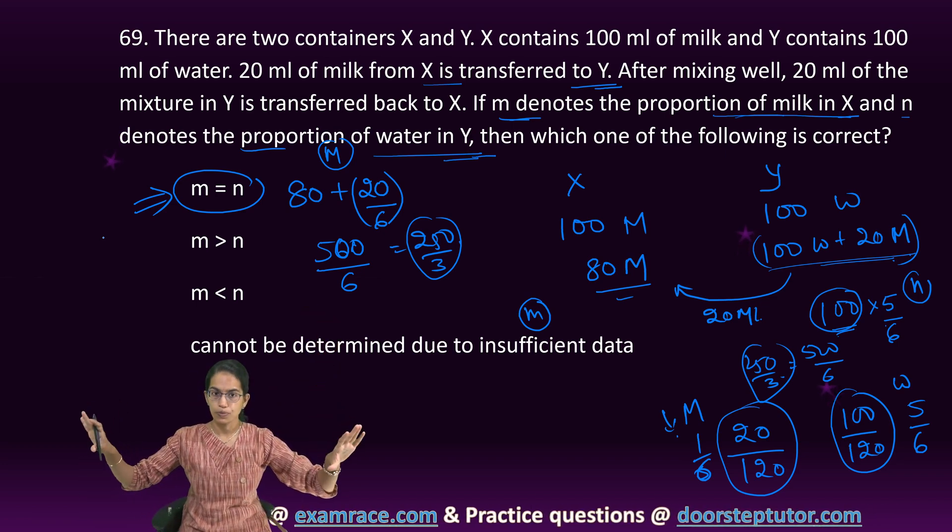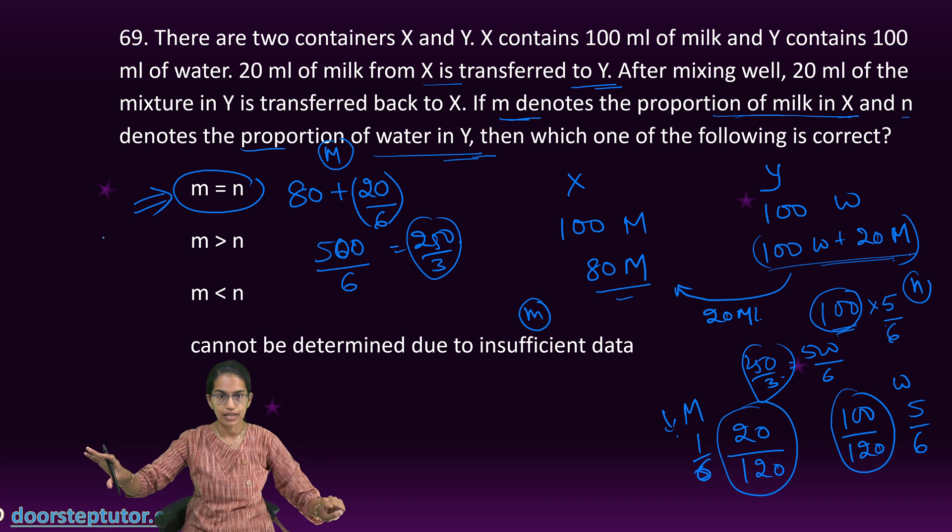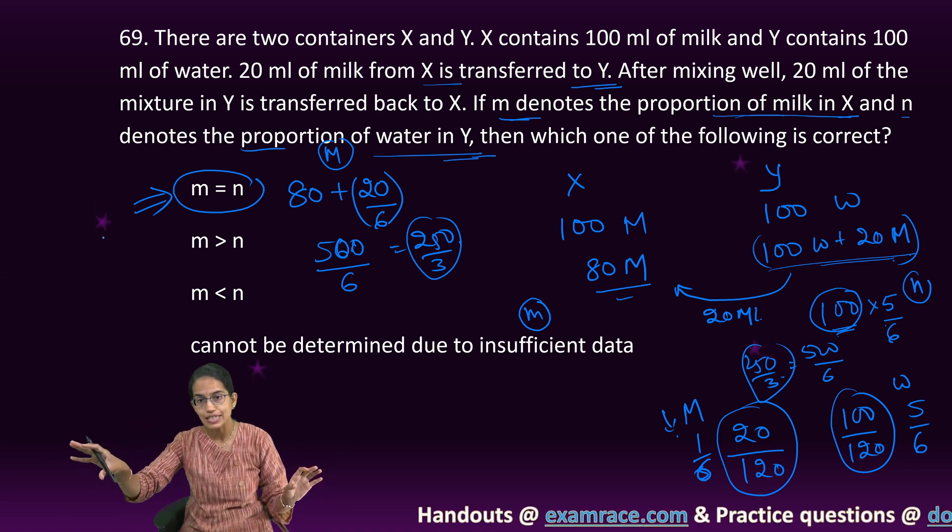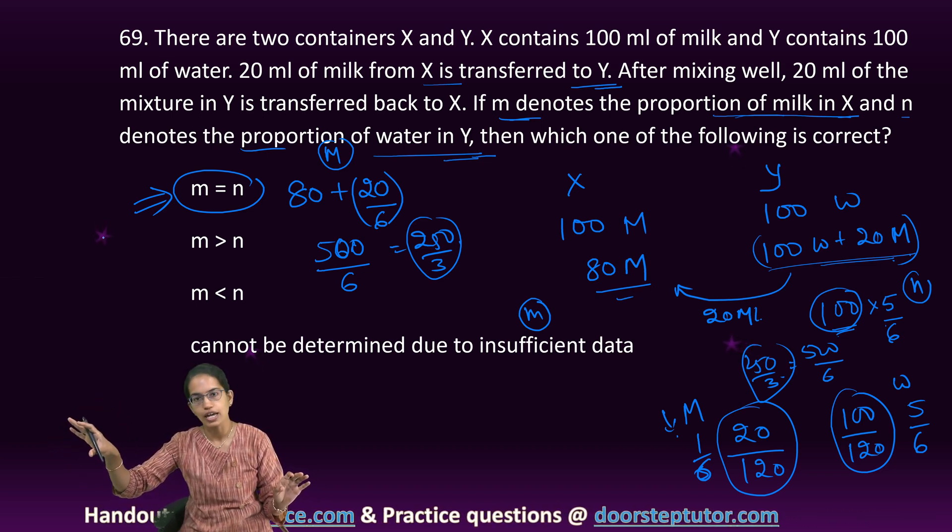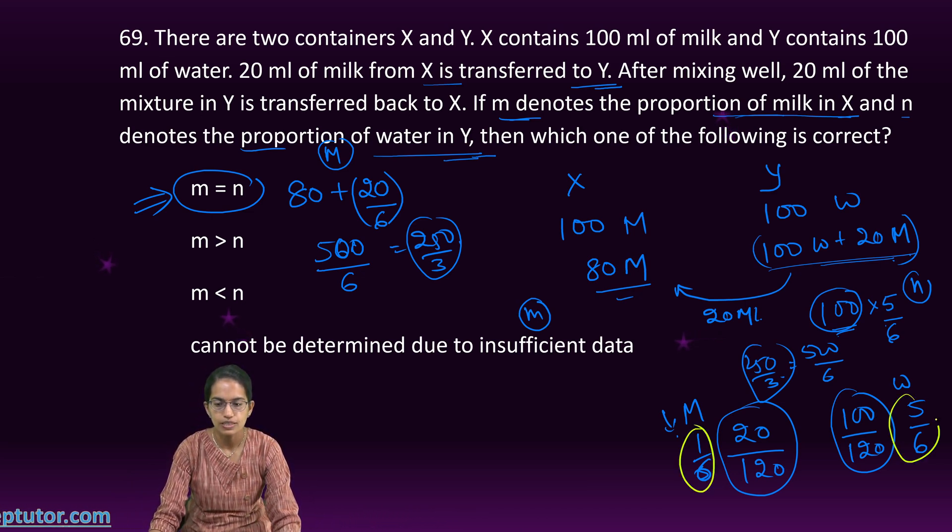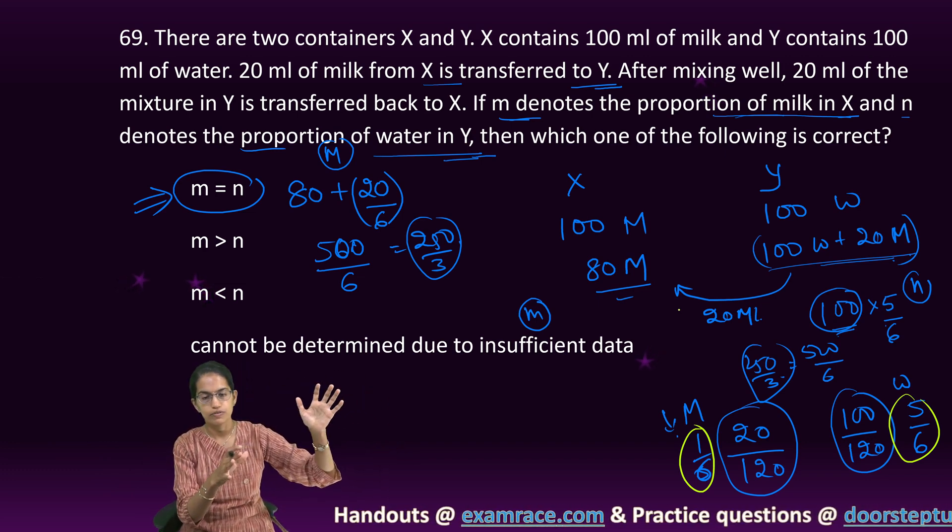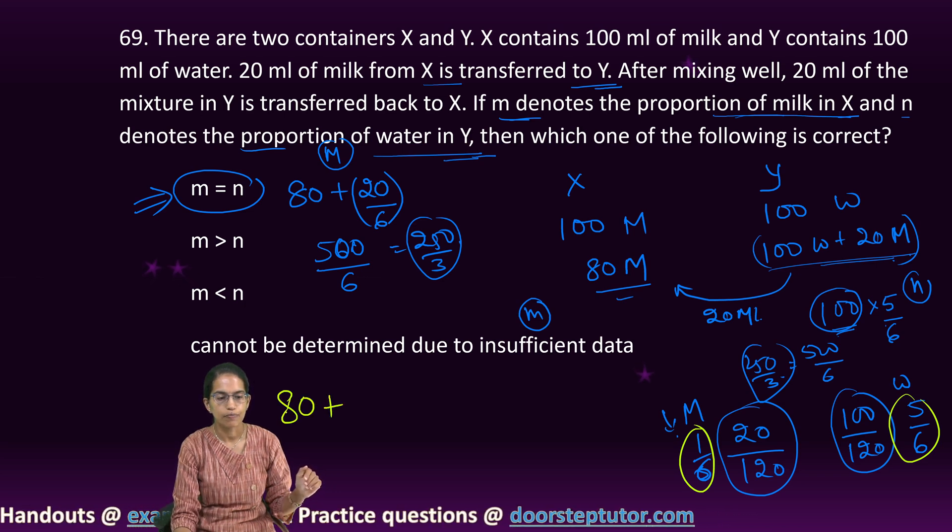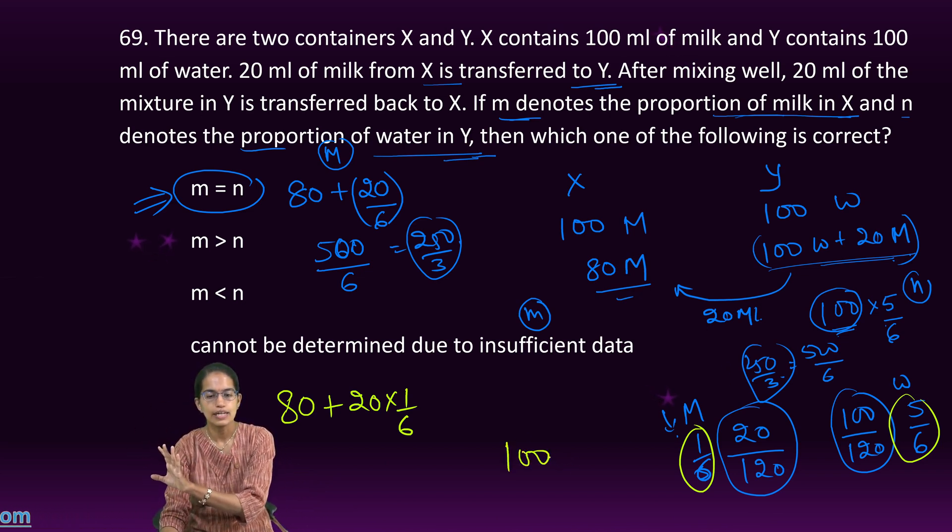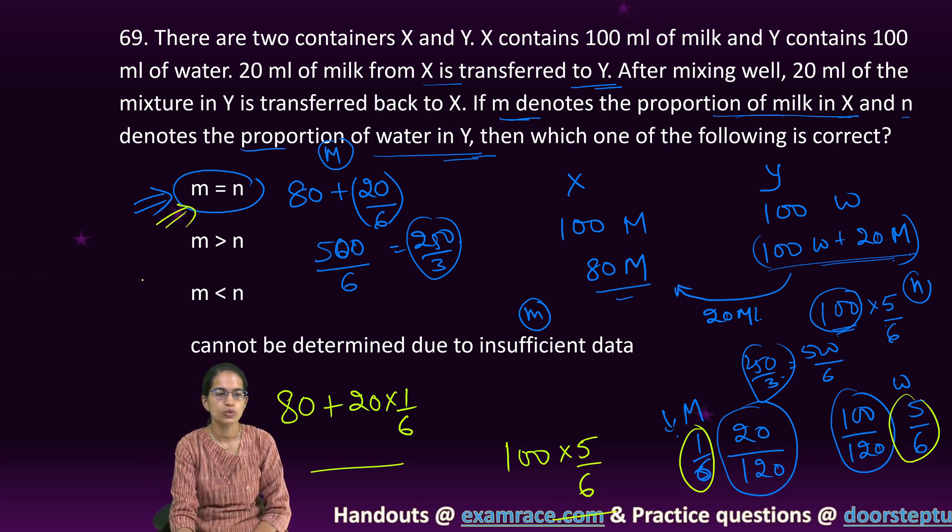I repeat. Initially both were pure: 100 ml milk and 100 ml water. Then 80 ml pure milk and 120 ml mixture with 20 ml milk. Concentration of milk is 1/6, water is 5/6. Of that concentration, I give 20 ml back to the milk bottle which is 80 ml already. That 80 ml gets 20 into the concentration of milk. The remaining 100 has water concentration 5 by 6. Both concentrations are equal, therefore M equals N.